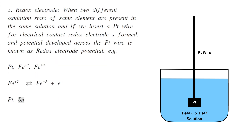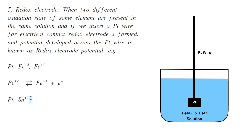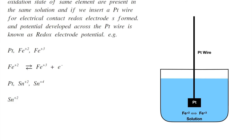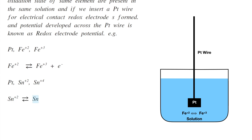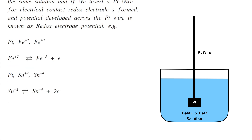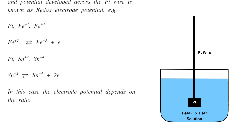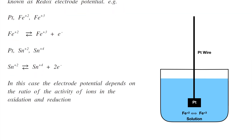Similarly, tin can form a redox electrode, represented as Pt in contact with Sn²⁺ and Sn⁴⁺ ions. The oxidation reaction is: Sn²⁺ → Sn⁴⁺ + 2e⁻. In this case, the electrode potential depends on the ratio of the activities of the ions in the oxidation and reduction states of the metal.